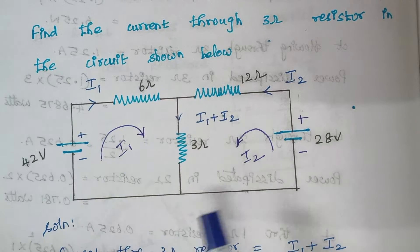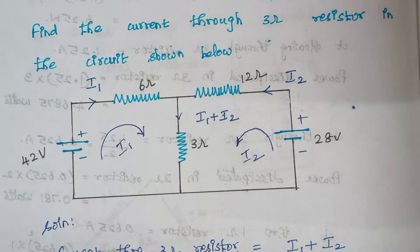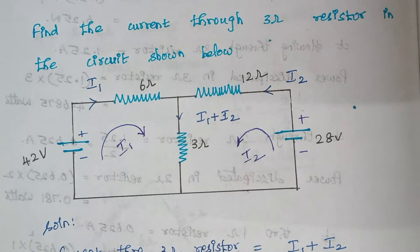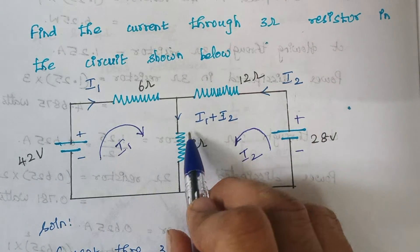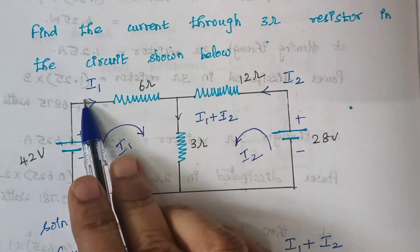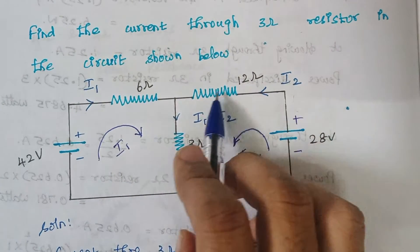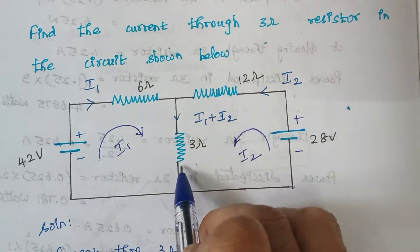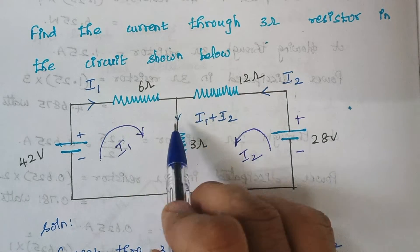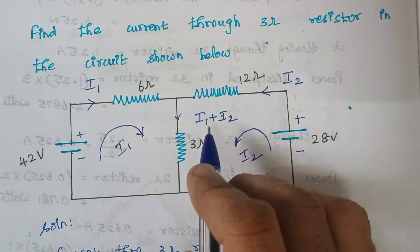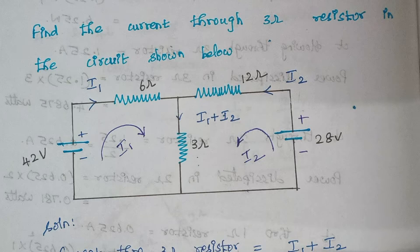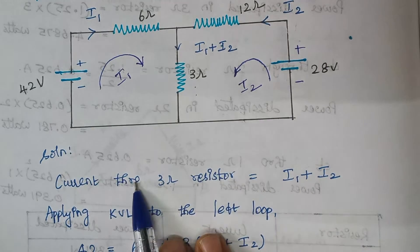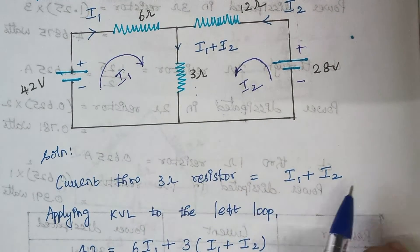It is up to you — you can take this as I1 and this as I2 as well, everything will be fine. From the flow of the current we can tell that the current flowing through this 3 ohm resistor: I1 comes in from one side and I2 comes in from the other side, and they both flow together through this 3 ohm resistor. Therefore, the current flowing through this 3 ohm resistor is I1 plus I2. Now we are going to calculate the values of I1 and I2.